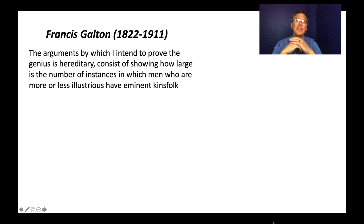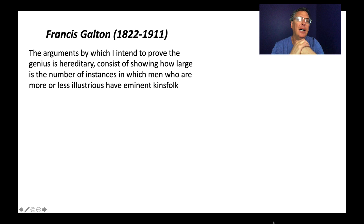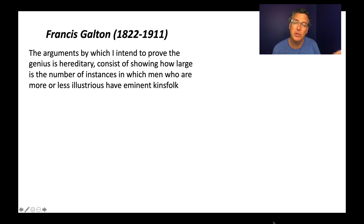We'll start with Francis Galton. Galton is a cousin of Darwin and was very fascinated by Darwin's ideas about inheriting traits from your parents. Darwin was really focused on physical traits — the actual shape of a beak or the kind of claw a bird might have — and how an organism's physical characteristics come to fit the sorts of opportunities the environment provides.